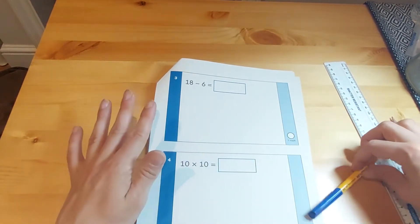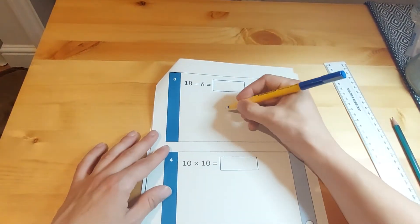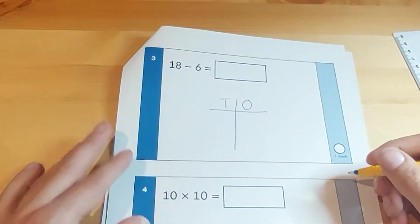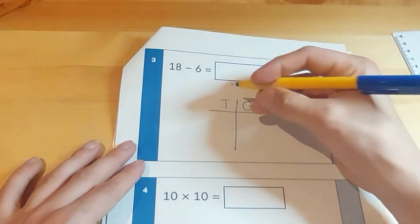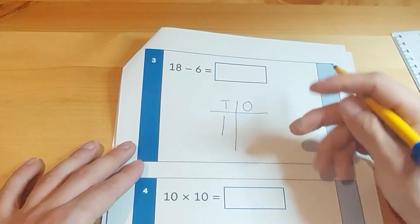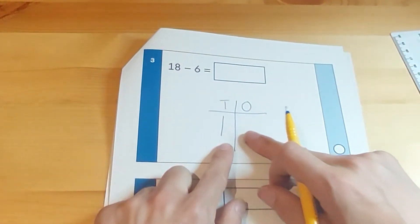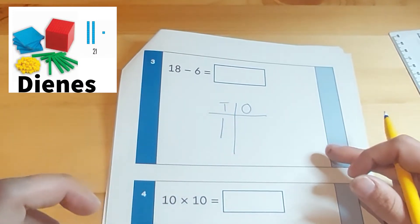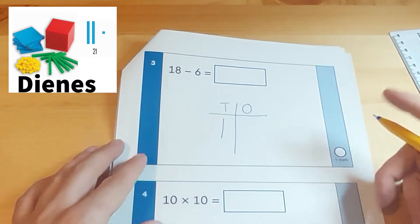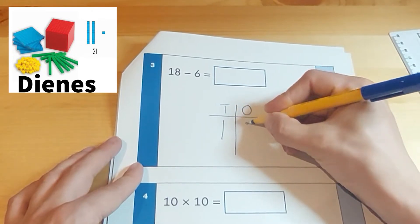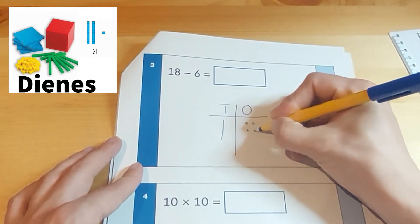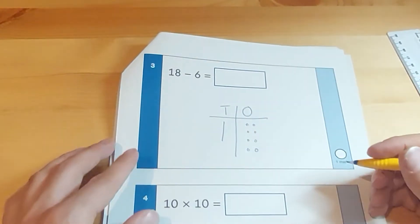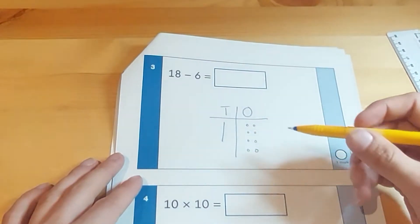Another way you can do it if they can't do that counting back is you would get them to draw a tens and ones grid like this. And then you would get them to make the big number which is 18, which is one 10 represented here as a line because that's what we use in class, and then we've got eight ones.